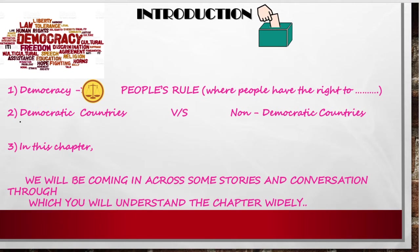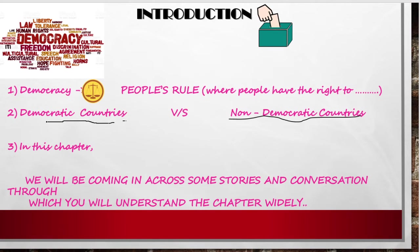Non-democratic countries are those which do not follow democracy. There is only a one-man rule, or you could say monarchy. The lifespan ruling will be there, meaning that the president, prime minister, or whoever is ruling that country could rule for as long as they want. We will be coming across some stories and case studies given in the book.